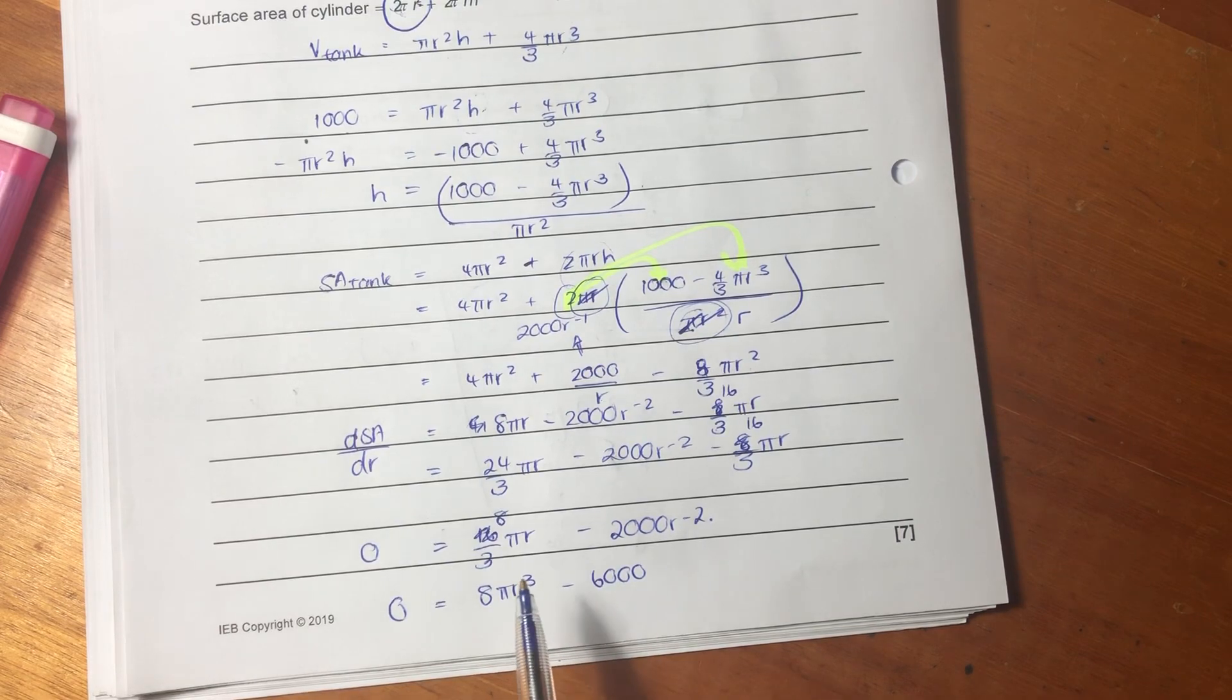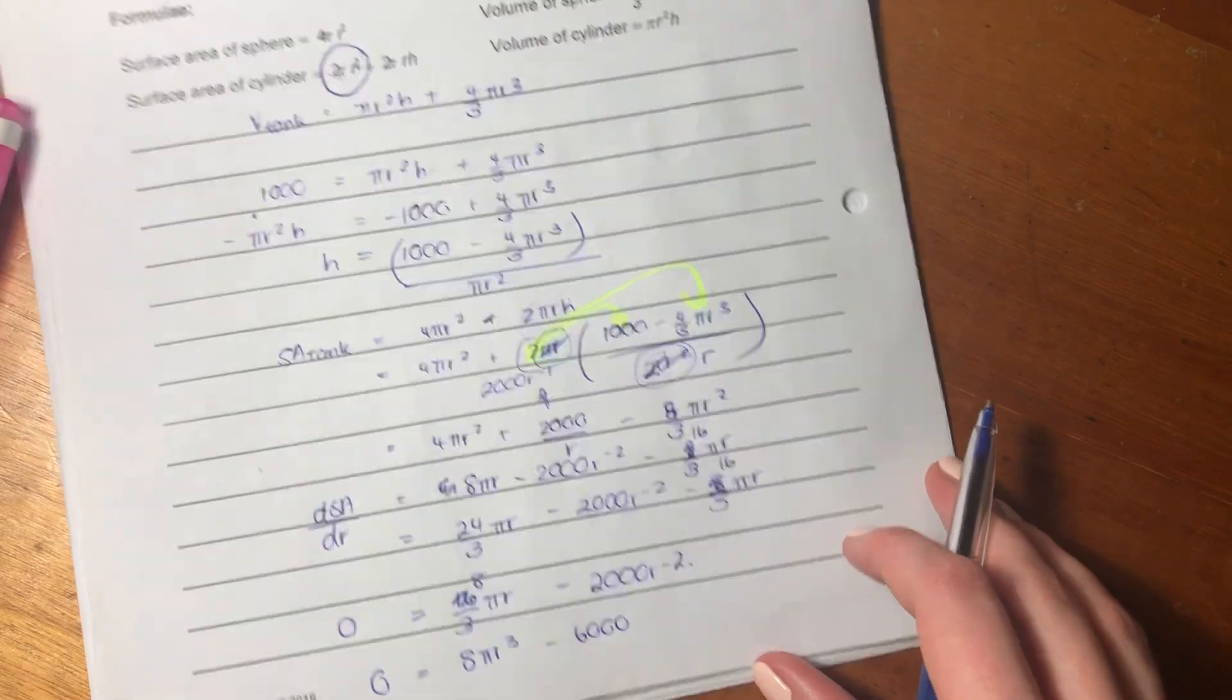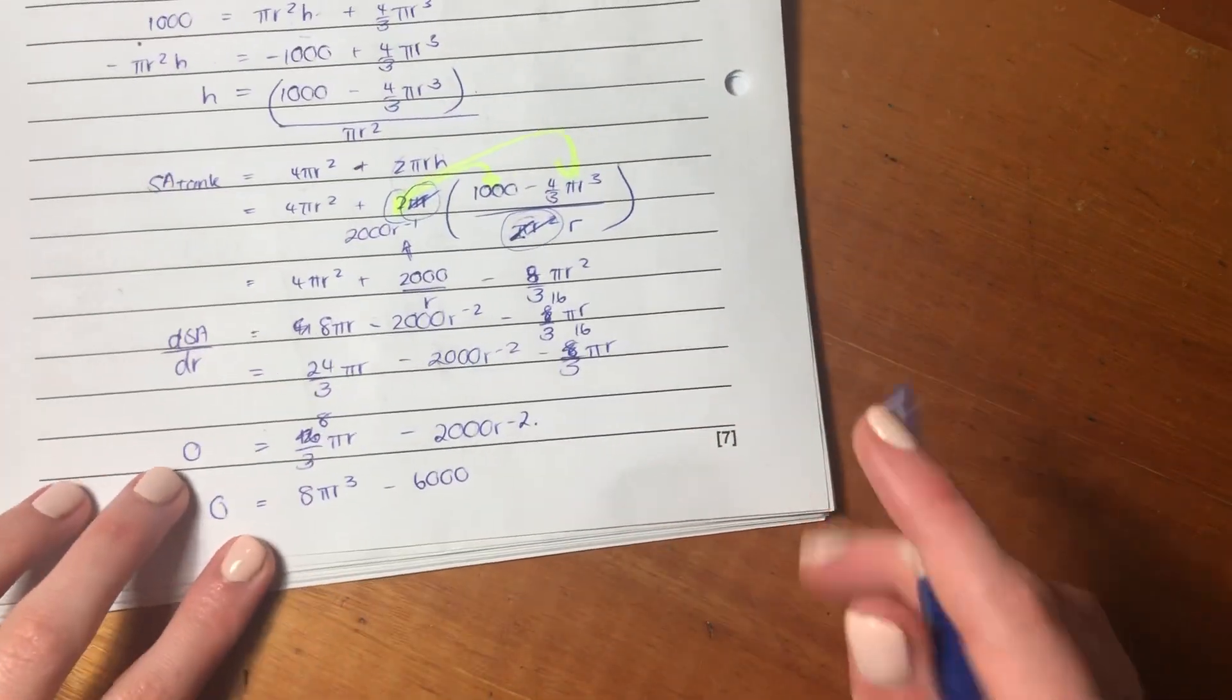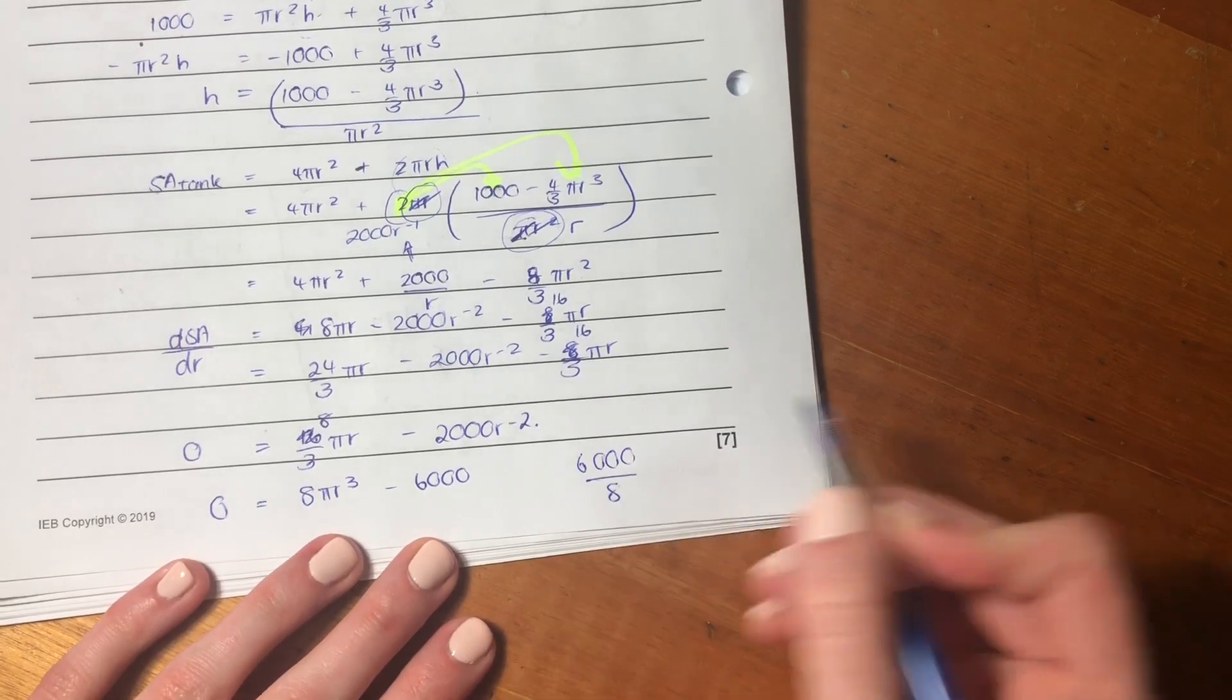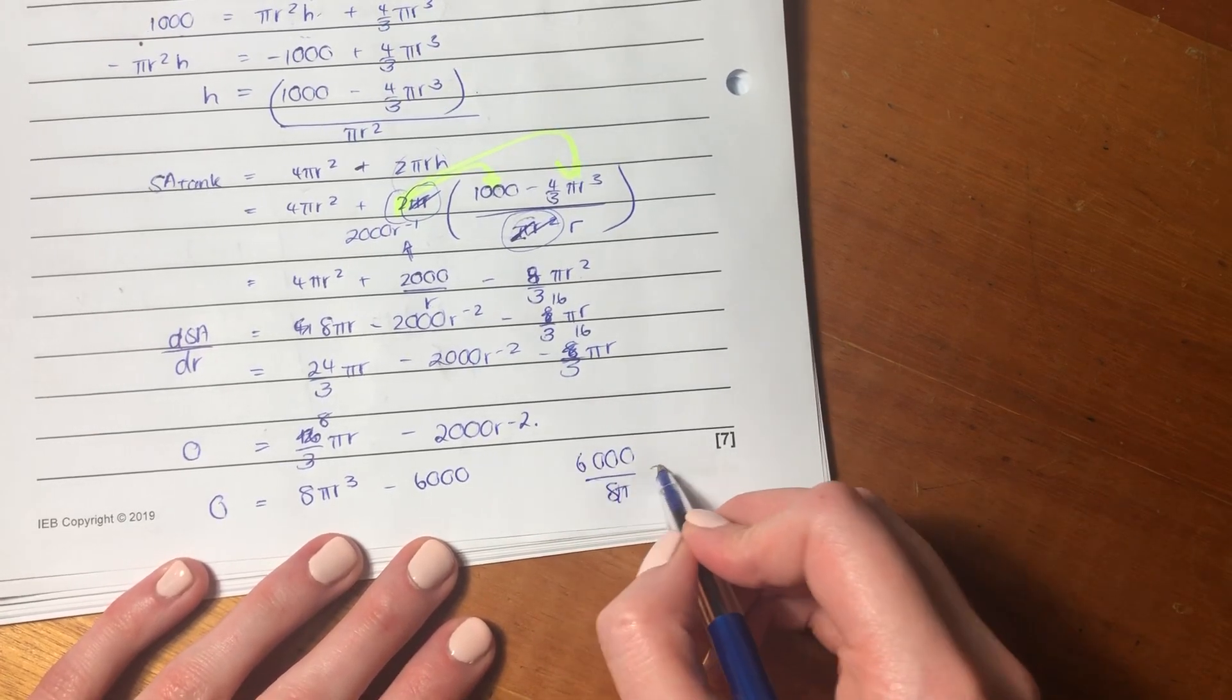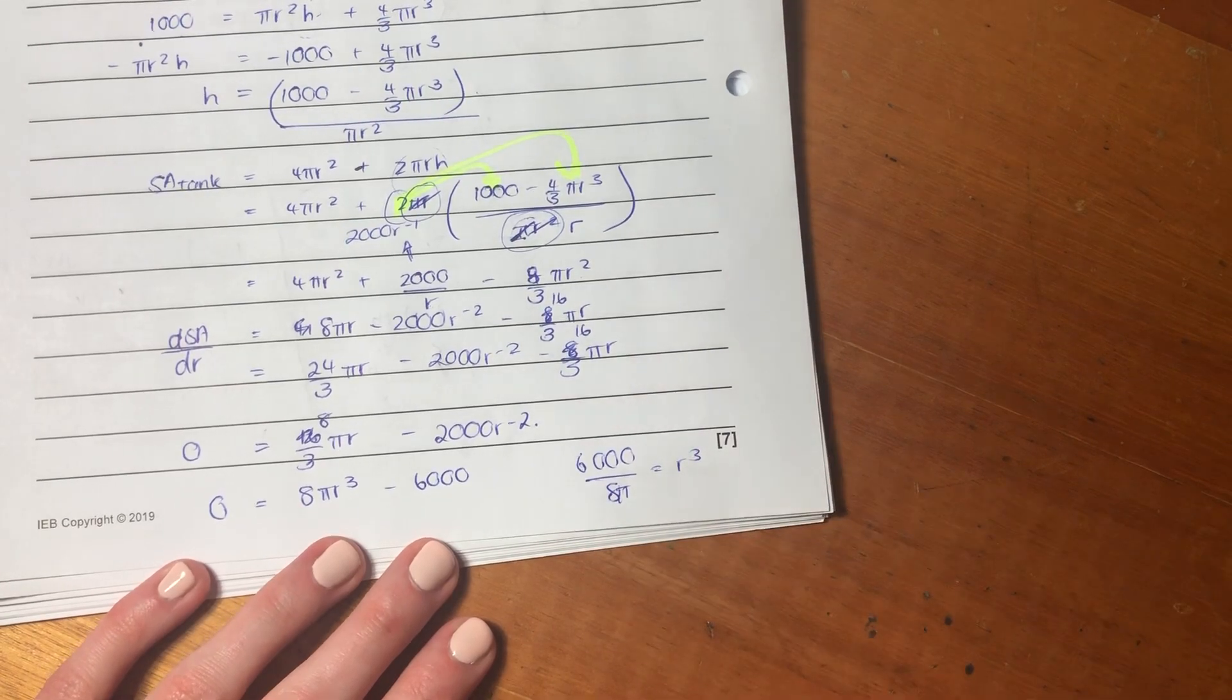Excellent. So, now, what do we do? Well, we only have one unknown, so we can just keep manipulating. I seem to be absolutely dreadful at managing my space, but that's neither here nor there. So, we have 6000 over 8π equals r to the 3.